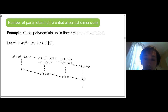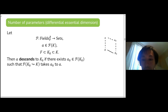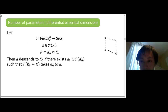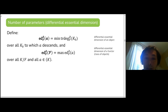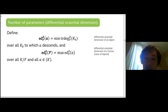In general, if we have any class of objects given by a functor F, then an object A over a field k is said to descend to k₀ if there is an object A₀ of that class over k₀ such that A₀ extended over k gives back A. The differential essential dimension of an object A is defined to be the minimum of the differential transcendence degrees of the differential fields that A descends to.